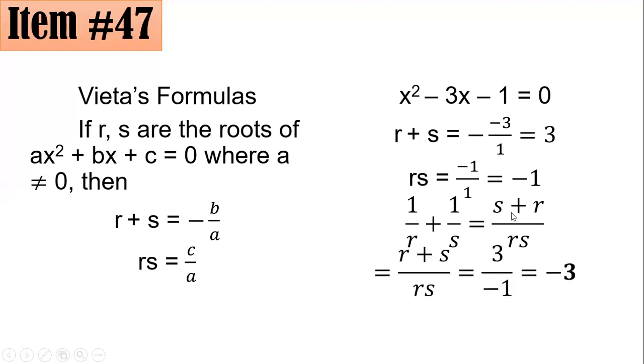But remember, by commutativity, s + r is the same as r + s over rs. But based on what we found, r + s is 3 and rs is -1. Hence, you have 3 over -1, which is -3. So letter A is the correct answer here.